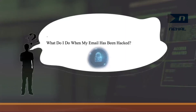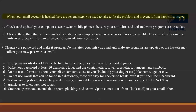What do I do when my email has been hacked? When your email account is hacked, here are several steps you need to take to fix the problem and prevent it from happening again. Check and update your computer security or mobile phone if you have a smartphone. Be sure your antivirus and anti-malware programs are up to date. Choose the setting that will automatically update your computer when new security fixes are available. If you are already using an antivirus program, run an end-to-end scan of your computer. Change your password and make it stronger — do this after your antivirus and anti-malware programs are updated, or the hacker may collect your new password as well.